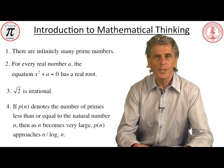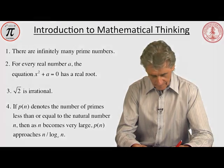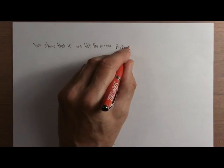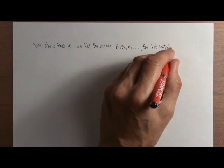Let me show you a proof of the first statement. It's due to the ancient Greek mathematician Euclid, who lived around 350 BCE. We show that if we list the primes p1, p2, p3, etc., the list continues forever.